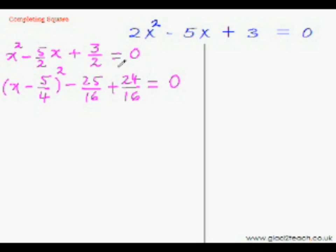So now we can easily add these fractions plus minus 25 plus 24 divided by 16 equal to 0. So make sure that you put plus here and not minus otherwise you will get a wrong answer. So minus 25 plus 24 would be minus 1 so that means this whole thing is minus 1 over 16.